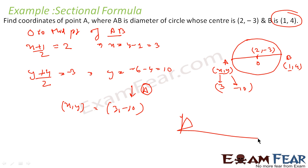Very simple. You draw the diagram — you have point B, you have center O, and you have to find point A. We know that O is the midpoint of AB, so we can directly apply the midpoint formula.